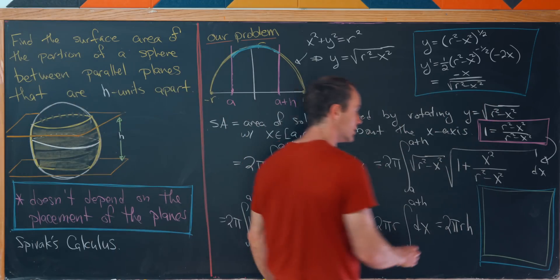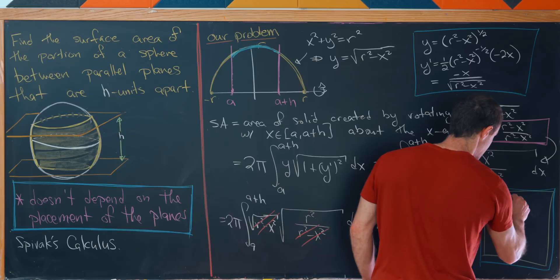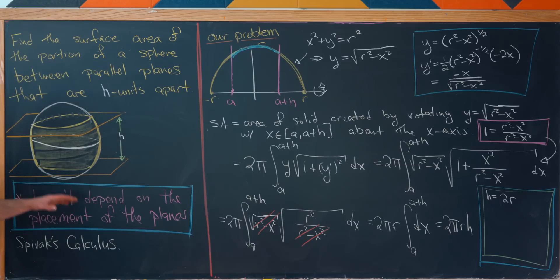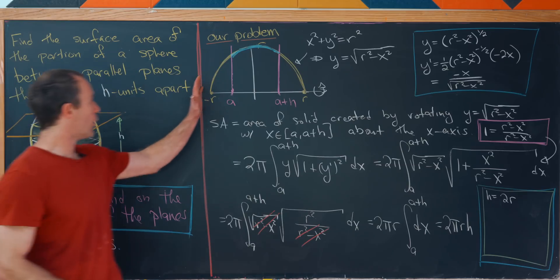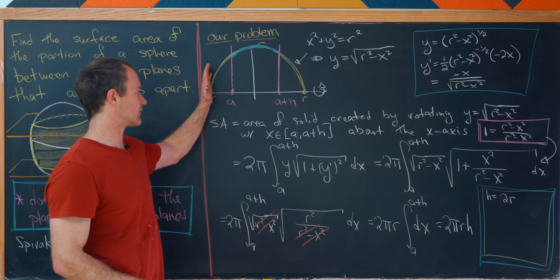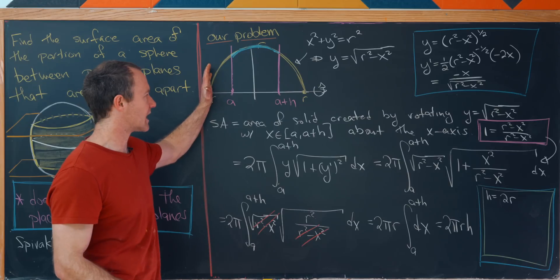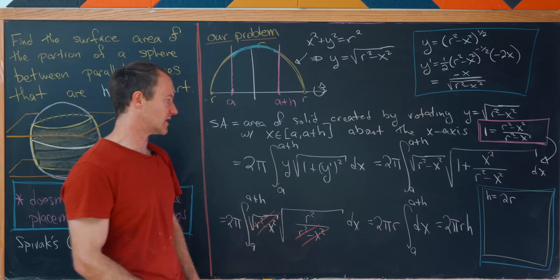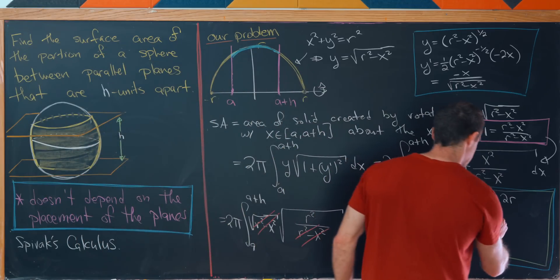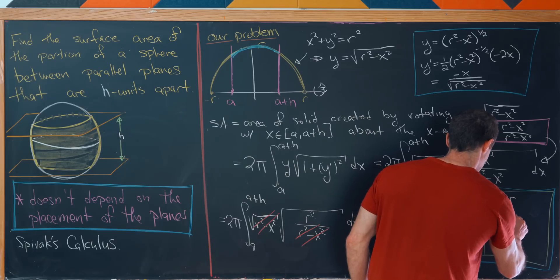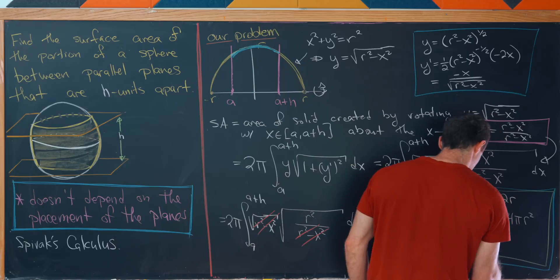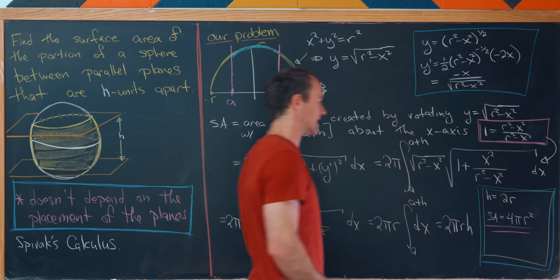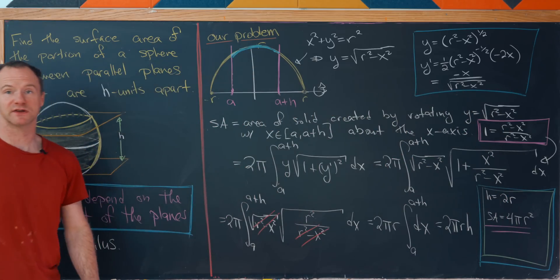And then just as a quick gut check to make sure this makes sense, can we get the surface area of the entire sphere using this formula? And we can. Notice that h equals 2r will give us the surface area of the sphere. That would be like maybe one plane right here at the minus r point and one plane right here. That gives us the entire sphere. But plugging that into here we get surface area is 4 pi r squared, which is the well known surface area of a sphere. And that's a good place to stop.